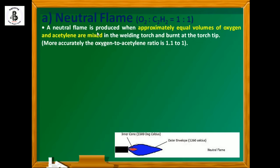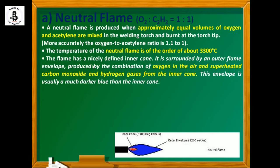A neutral flame is produced when approximately equal volumes of oxygen and acetylene are mixed in the welding torch and burned at the torch tip. More accurately, the oxygen to acetylene ratio will be 1 to 1 or you can say 1.1 to 1. The temperature of the neutral flame is of the order of about 3300 degree centigrade. The flame has a nicely defined inner cone. It is surrounded by an outer flame envelope produced by combination of oxygen in the air and superheated carbon monoxide and hydrogen gases from the inner cone.